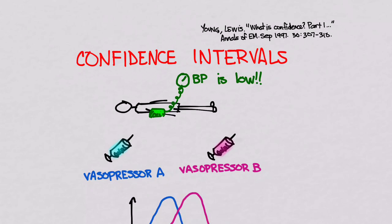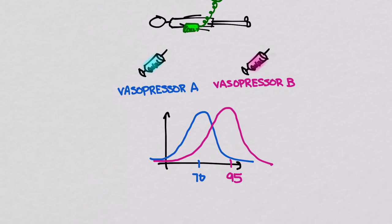So we do a trial. In this trial, we look at two samples — one gets vasopressor A, one gets vasopressor B. The mean increase in blood pressure for vasopressor A was 70, and the mean increase for vasopressor B was 95. So the difference is 25.